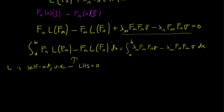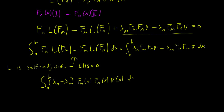This implies that the left-hand side is 0, and we're left with the integral from a to b of (lambda_n minus lambda_m) * F_m(x) * F_n(x) * sigma(x) dx equals 0. Remember the lambdas are eigenvalues and they are numbers, but F_m and F_n are functions.